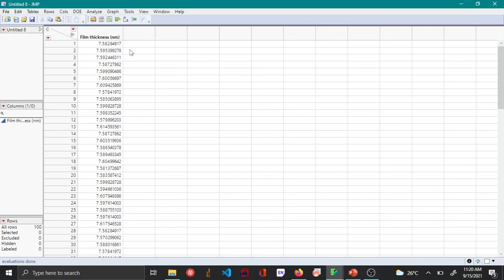The data set that I have here is a film thickness of a certain polymer. The film thickness was measured using ellipsometer and the measurements were taken from 100 different samples. So here you have 100 different film thickness values for the same type of polymer.